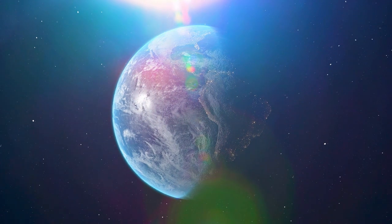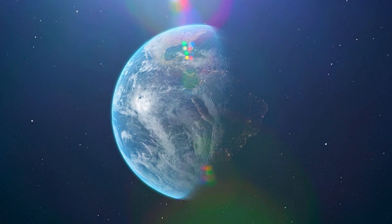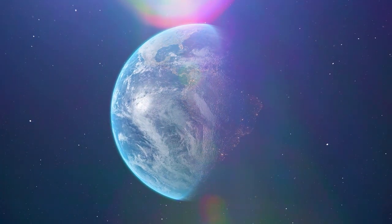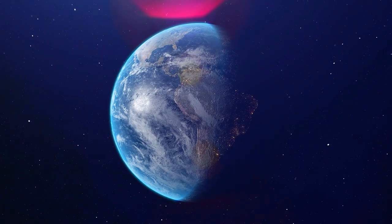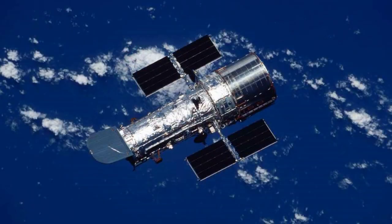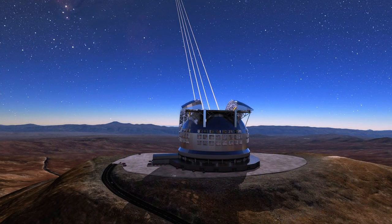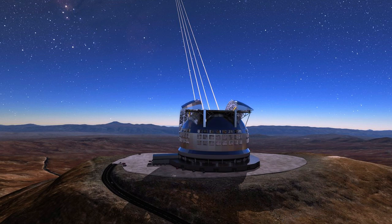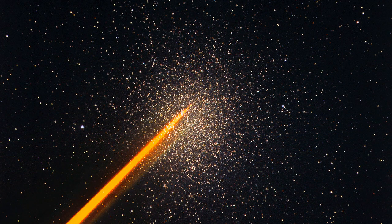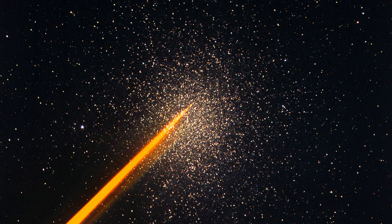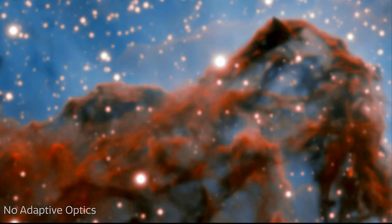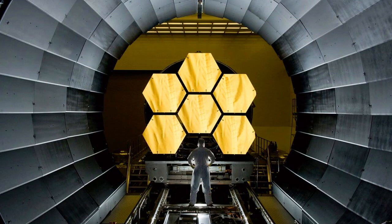While our planet's atmosphere sustains life, it does pose challenges for astronomers observing space. But fear not—they have devised ingenious solutions. They've either placed observatories in space above the atmosphere or incorporated adaptive optics into ground-based telescopes. Adaptive optics systems deploy laser beams to create artificial guide stars in the atmosphere. These serve as reference points to assess atmospheric distortion, allowing the system to make constant micro-adjustments to the telescope's mirrors. The outcome: a clearer and more defined view, as if the atmosphere weren't interfering.